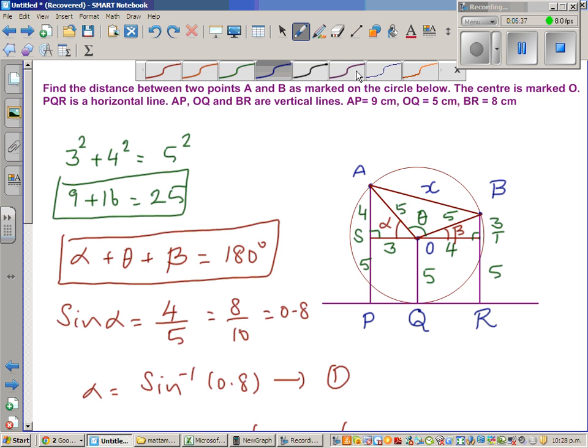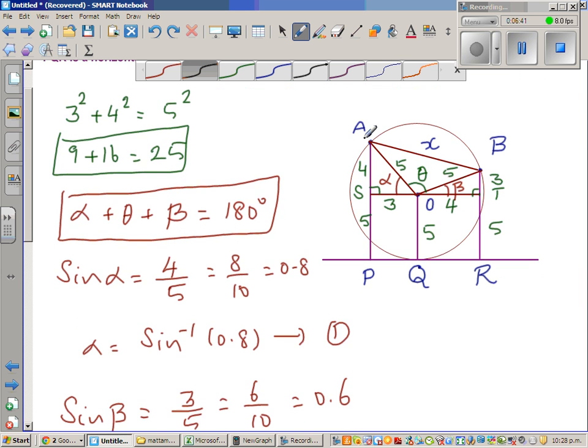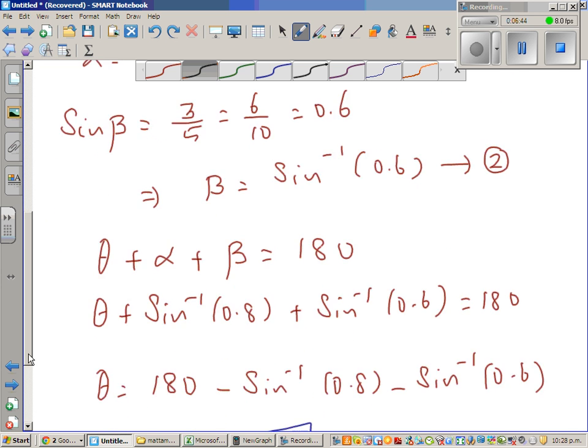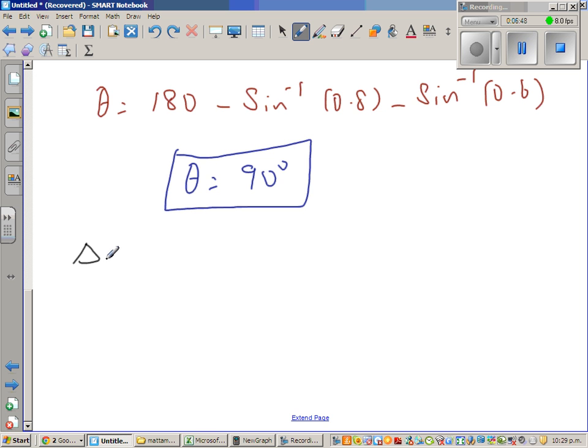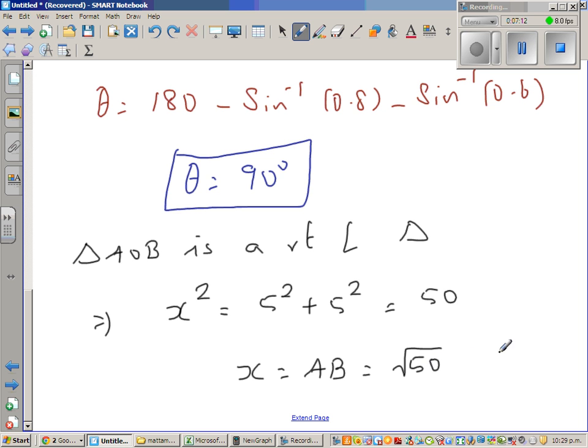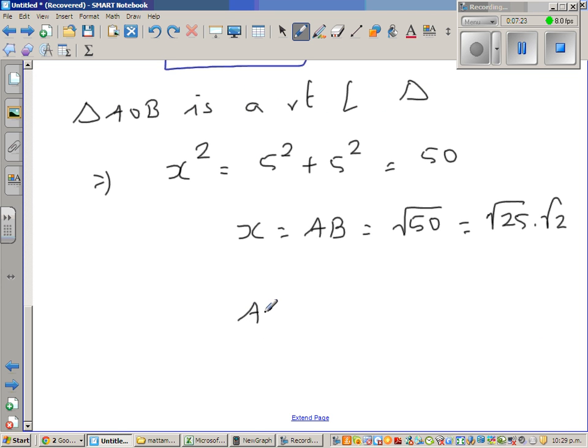So your theta is 90. So now we can use Pythagoras theorem because AOB is also a right angle triangle. So we can say triangle AOB is a right angled triangle, which implies x squared is 5 squared plus 5 squared, which is 25 plus 25, which is 50. So x, which is nothing but AB, is square root of 50. This is square root of 25 times square root of 2. So AB is 5 root 2, the answer.